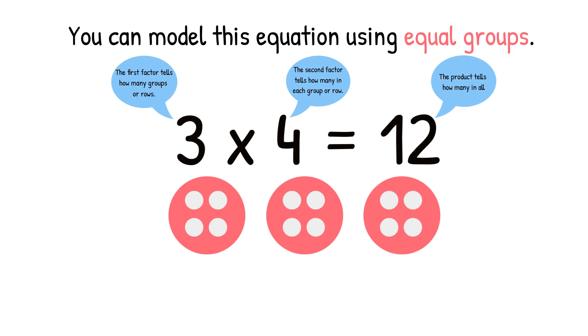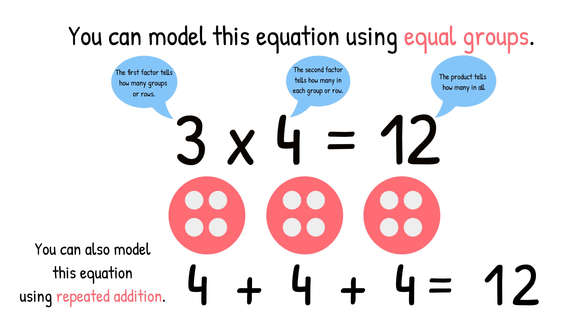We find the product by adding them all together. So we can also model this equation using repeated addition. Your repeated addition equation would be 4 plus 4 plus 4, and that equals 12.